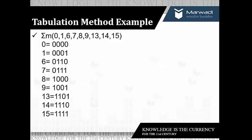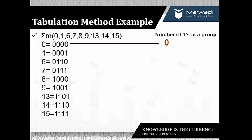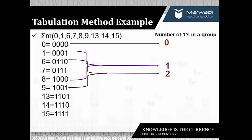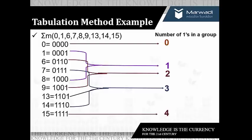Let's take the example. The given example comprises the minterms 0, 1, 6, 7, 8, 9, 13, 14, and 15. I have already written the binary equivalent of these minterms. We will be grouping them in terms of the number of ones: decimal 0 has zero ones, 1 and 8 have a single one, 6 and 9 have two ones, 7, 13, and 14 have three ones, and 15 has four ones.